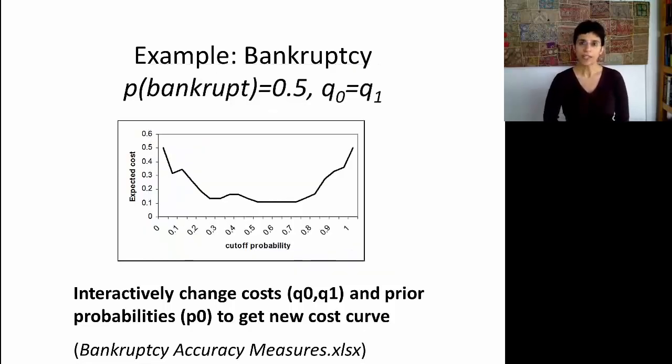Similarly, we can also think about modifying the costs of misclassifying a bankrupt firm as solvent, and the other way around. And I'll let you play with that Excel file and see what happens to the cost when you also change the values of the queues.